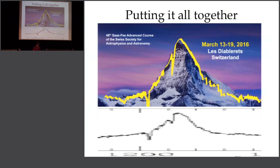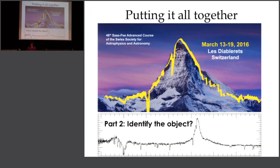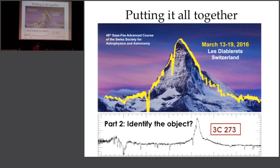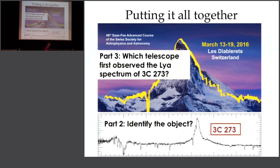It's a low-resolution spectrum. Anne confirms it's based on real data, so part two of the game is to identify the object. An audience member identifies it as a quasar — specifically 3C273, the only one they know by name. Part three: which telescope first observed the Lyman-alpha spectrum of 3C273?